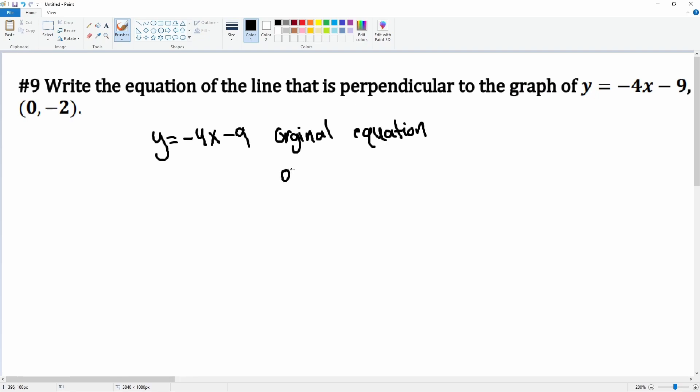Okay, so let's find the original slope. And the original slope is this value of m is equal to negative 4.